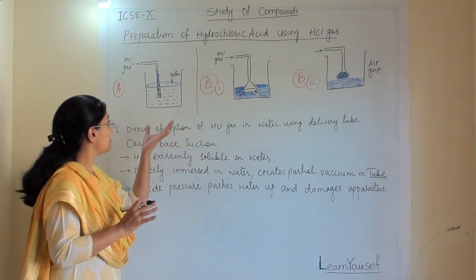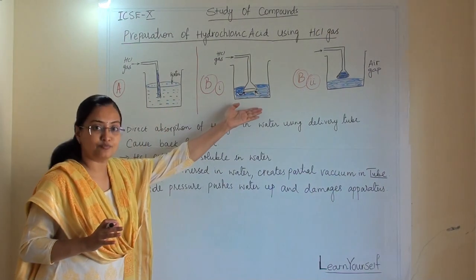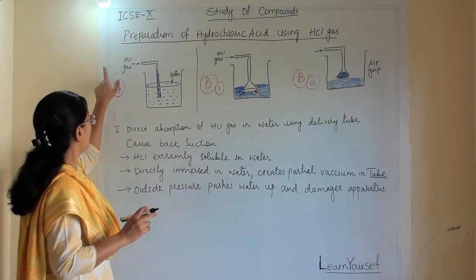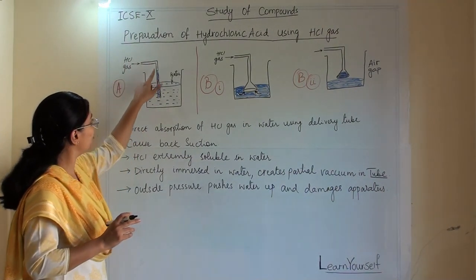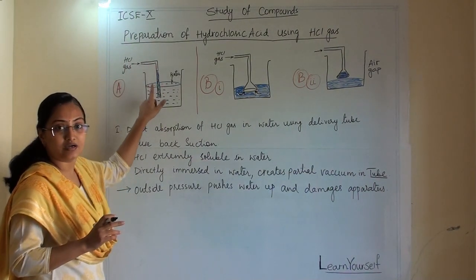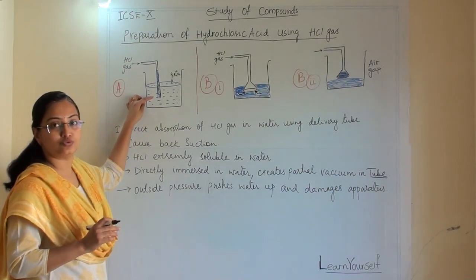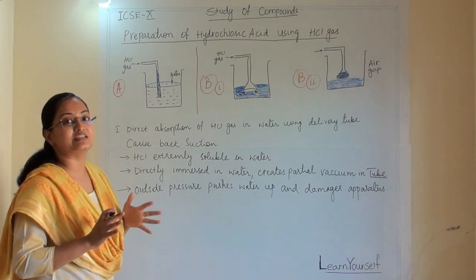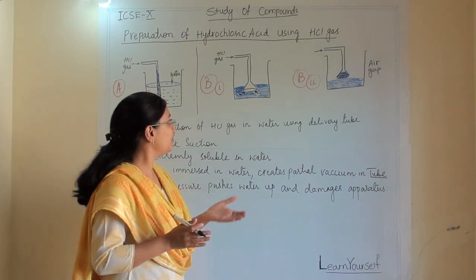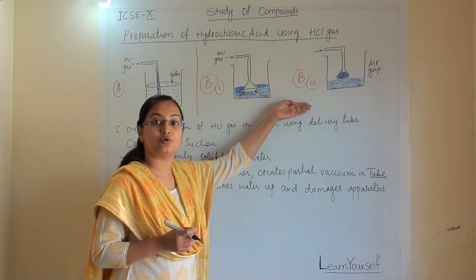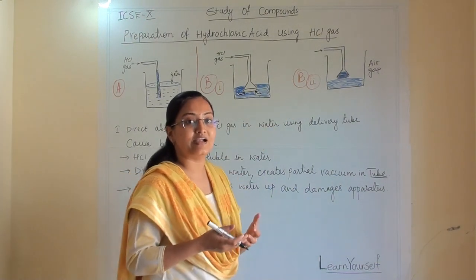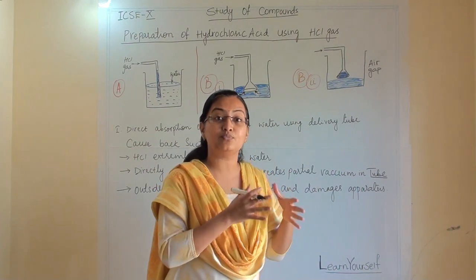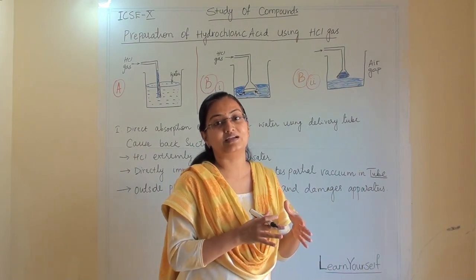Here I have displayed two different kinds of procedures. In the first procedure, I am passing hydrogen chloride gas through a gas tube and it is directly going into the water, but this process is practically not possible. Now let us understand why process A is not possible and process B is practically possible.